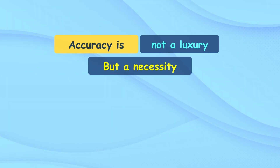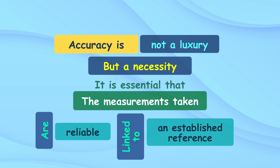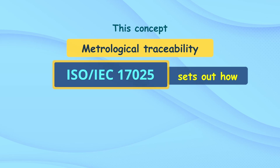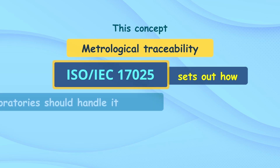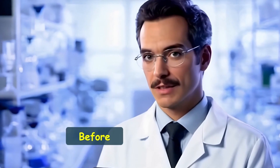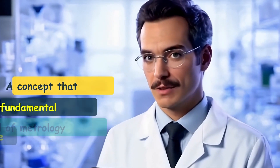Metrological traceability: in the laboratory world, accuracy is not a luxury but a necessity. To achieve that accuracy, it is essential that the measurements taken are reliable and linked to an established reference. This concept is known as metrological traceability, and ISO/IEC 17025 sets out how laboratories should handle it to ensure the accuracy and validity of their results.